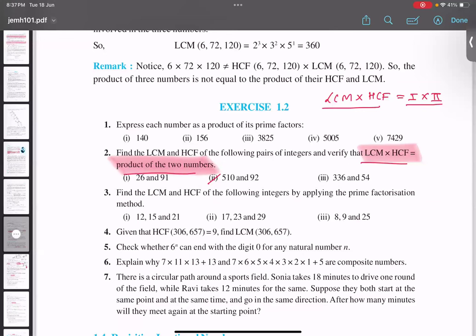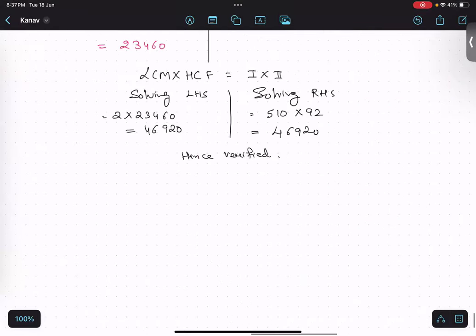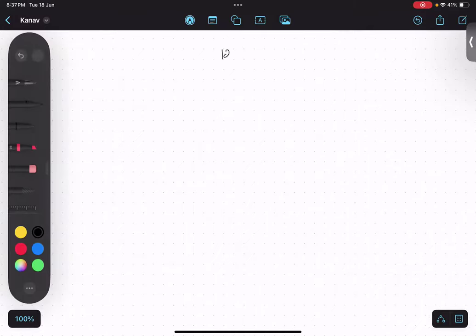So in question number three, again LCM and HCF, they're asking, question first: 12, 15, and 21. So, 12, 15, and 21.